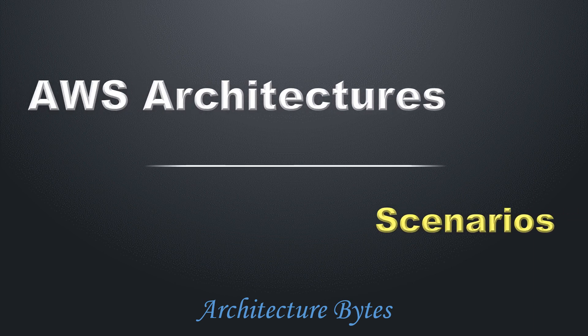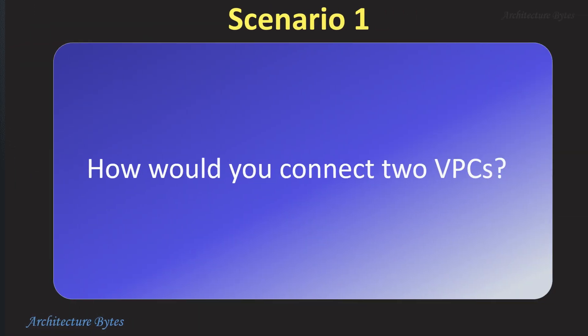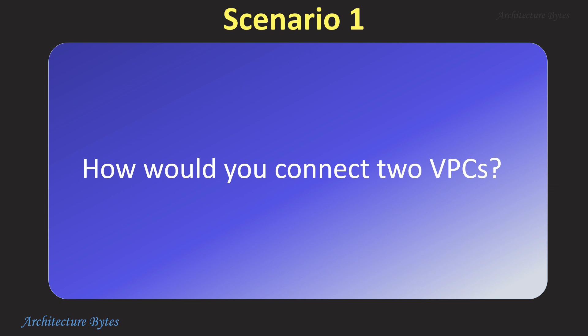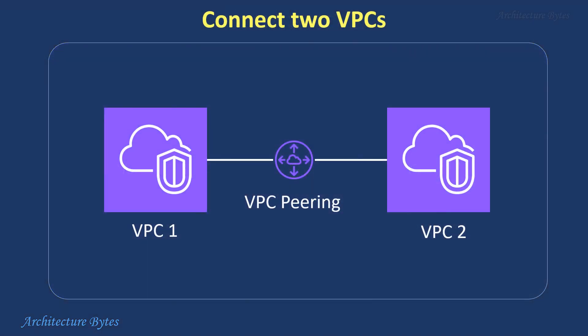AWS architectures. How would you connect two VPCs? VPCs can be connected using VPC peering. It is a way to connect two VPCs so that they can communicate privately using their internal IP addresses. Remember that it does not work like a network hub — it is more like creating point-to-point connections and cannot be used to create a transitive connection between other VPCs.